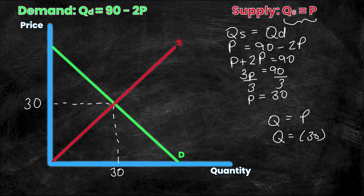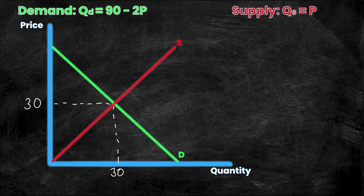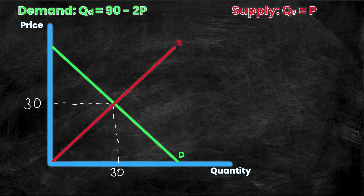There are two more intersection points I need to calculate consumer surplus: where the demand curve intersects the price axis and where the supply curve intersects the price axis. These are just linear equations — equations of straight lines. To find the intersection with the price axis (the y-axis), I simply set quantity equal to zero, because anywhere along the price axis the quantity equals zero. For the supply curve, setting quantity to zero gives zero equals p, so that intersection point is simply zero.